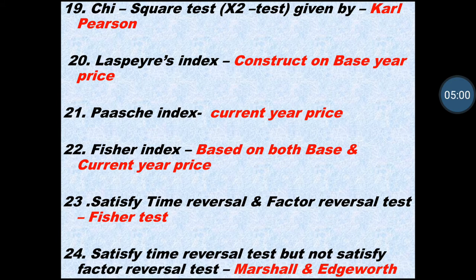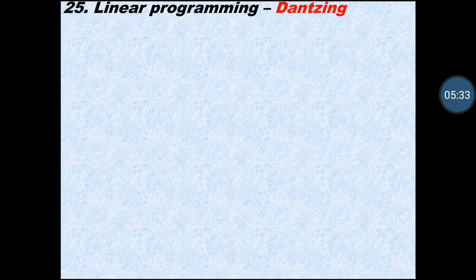The index that satisfies both time reversal test and factor reversal test is Fisher's index. The index that satisfies the time reversal test but does not satisfy the factor reversal test is Marshall-Edgeworth. In exams — I have checked seven to eight papers — they frequently ask this: Fisher's satisfies both, Marshall-Edgeworth satisfies time reversal but not factor reversal.